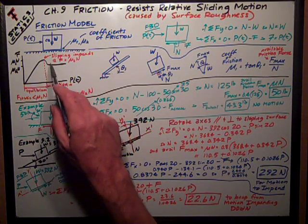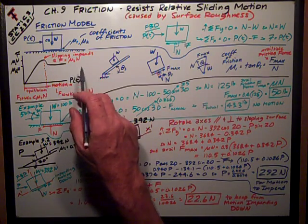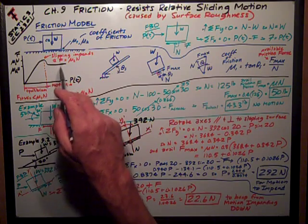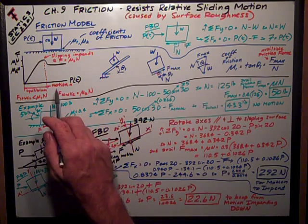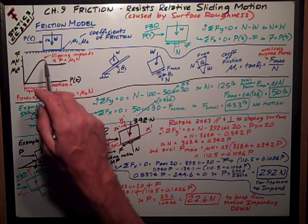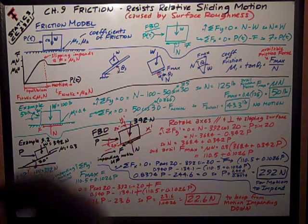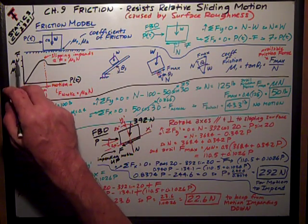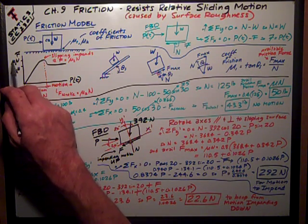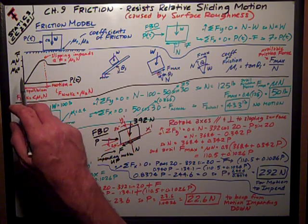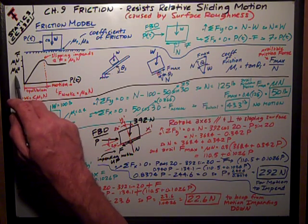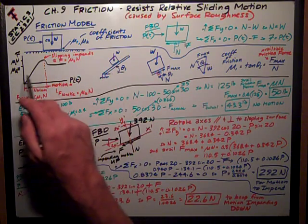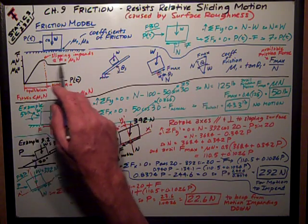Until you get to this point of slipping impending — meaning it begins to occur — the block is in equilibrium. Once you hit that point, motion occurs. Where it's about to occur, we say motion is impending. The friction force at that point is F max, which is mu sub s times the normal force. Once motion starts, we have a lower coefficient of friction, mu sub k, times the normal force, and that's this part of the line here.